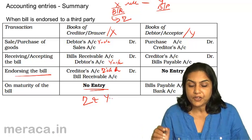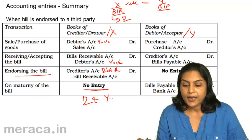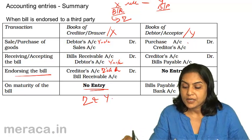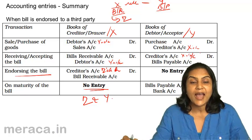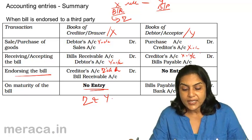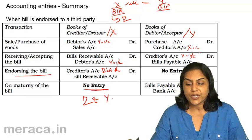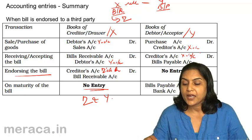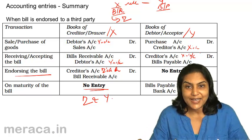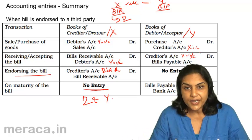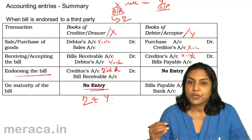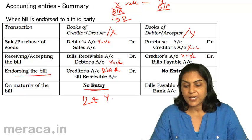What are the corresponding entries in the books of Y? When the goods were purchased by Y: purchase account debit to X's account. X's account debit to bills payable when he accepts the bill. When X endorses the bill to Z, Y is not affected and passes no entry. However, on maturity when the bill is presented by Z, he honours the bill, the bill is cancelled, and the entry is bills payable account debit to bank or cash.